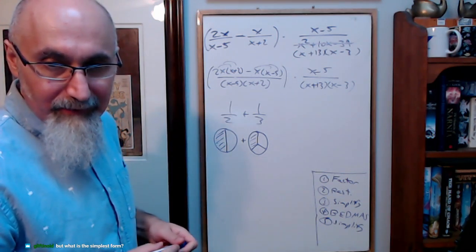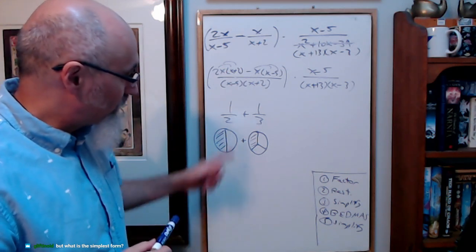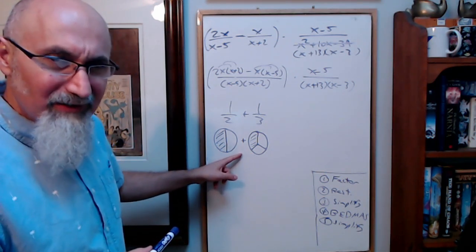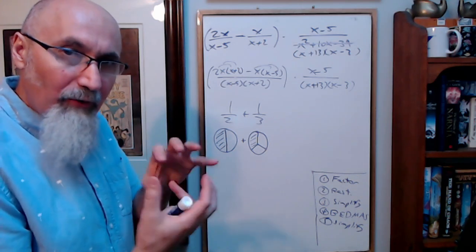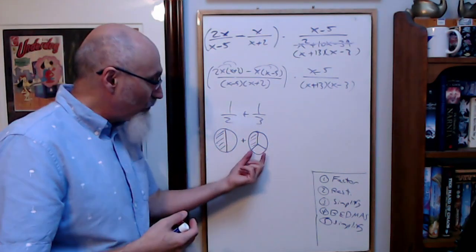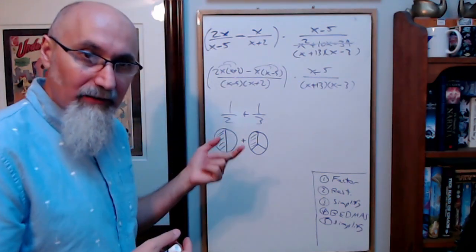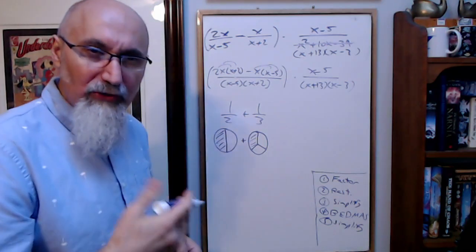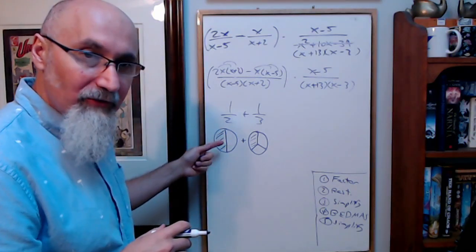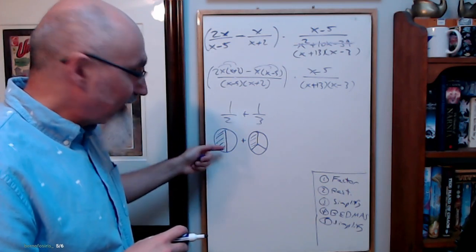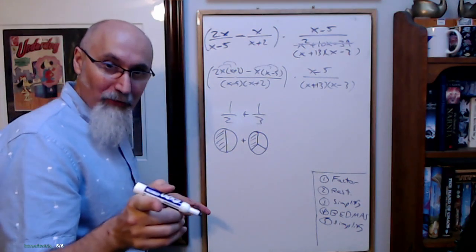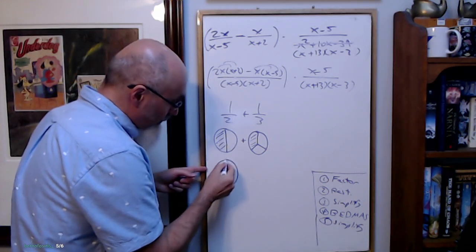We want to add 1 over 2 plus 1 over 3. We'll do it in simplest form. We can't add them right now because they're not broken into compatible parts. What we need to do is take each one of these wholes and break them into equal parts. The common denominator — the lowest common multiple — for 2 and 3 is 6, because both 2 and 3 go into 6.